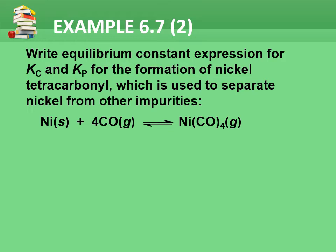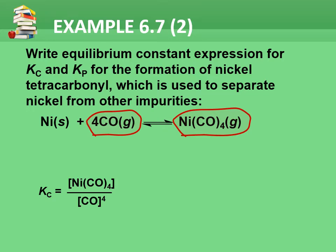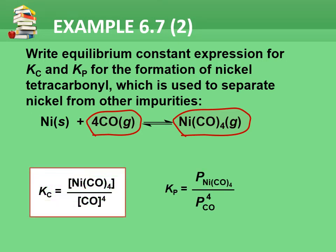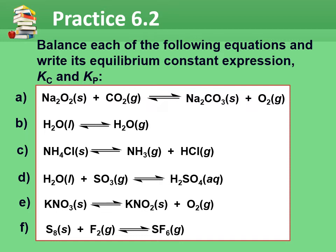Let's look at example 6.7, question 2: write equilibrium constants Kc and Kp for the formation of nickel tetracarbonyl, which is used to separate nickel from other impurities. When we look at the balanced equation, we notice that nickel, the reactant, is a solid. So carbon monoxide and nickel tetracarbonyl are the only species coming into consideration. Therefore, Kc equals to concentration of nickel tetracarbonyl divided by the concentration of carbon monoxide to the power of 4, and Kp equals to the partial pressure of nickel tetracarbonyl divided by the partial pressure of carbon monoxide to the power of 4. Your homework is to balance each of the following equations and write the equilibrium constant expressions Kc and Kp in practice 6.2.